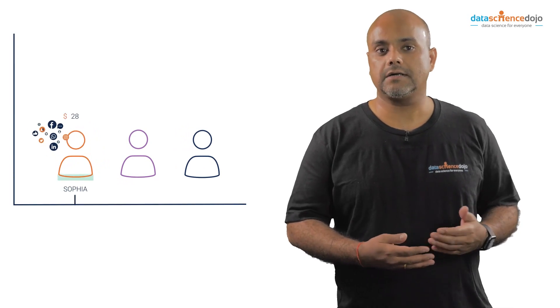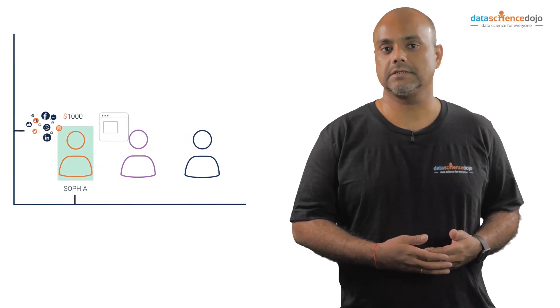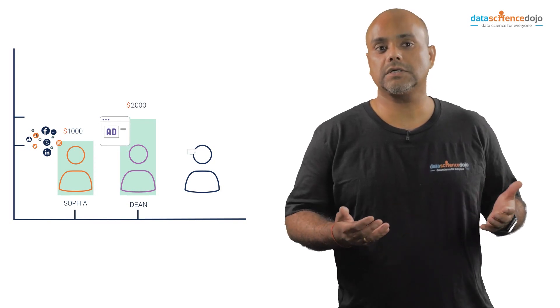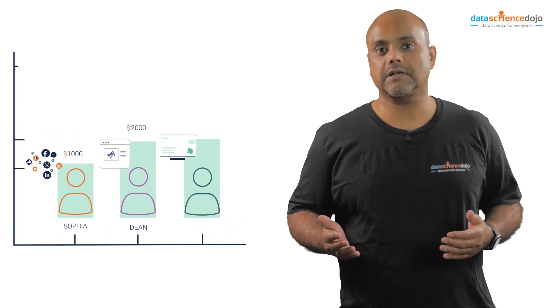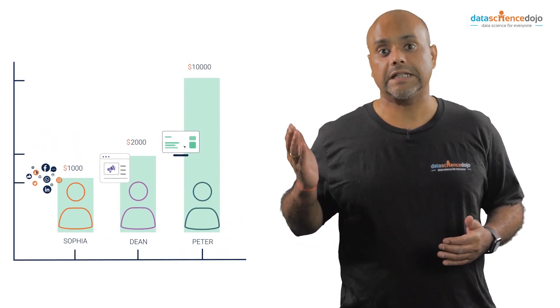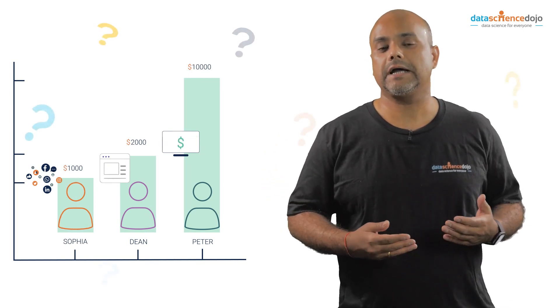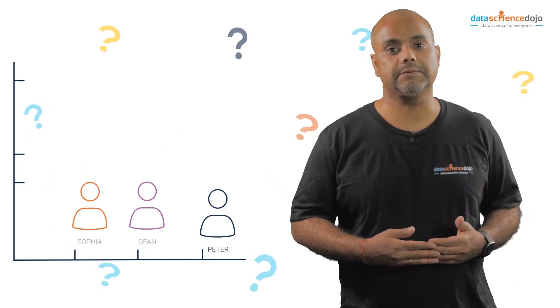Imagine that your sales team has three members. Social Media Sophia earned the company $1,000. Display Ad Dean earned the company $2,000. And Pay Per Click Peter earned the company $10,000. Let me ask you, who is the best member of the team?